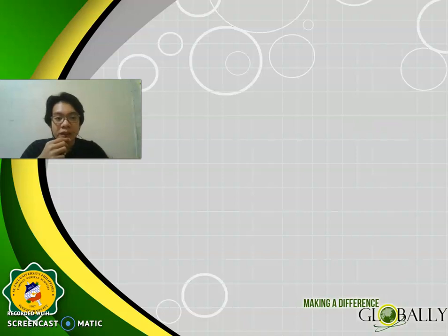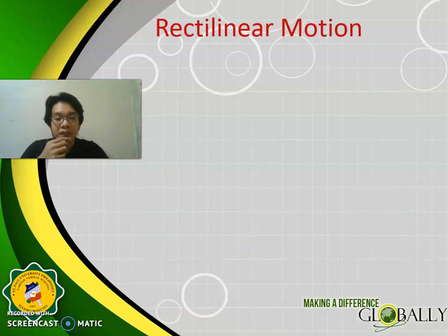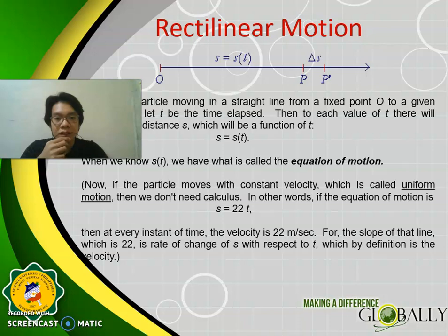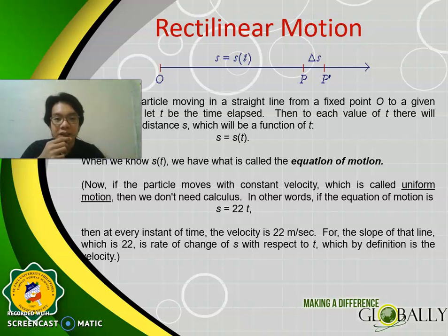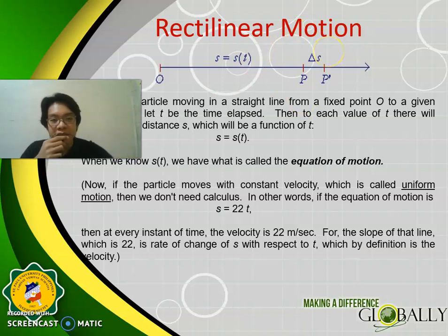Calculus — one of its most important applications is the motion in a straight line, which is called Rectilinear Motion. Consider a particle moving in a straight line from a fixed point 0 to a given point P, and let T be the time elapsed. Then to each value of T, there will correspond a distance S, which will be a function of T: S is equal to S(T). When we know S(T), we have what is called the equation of motion.